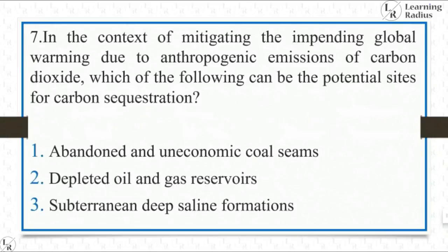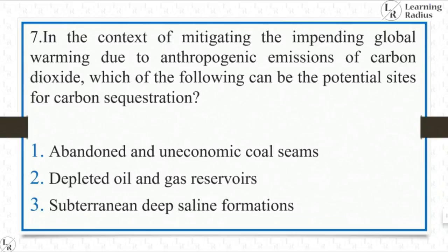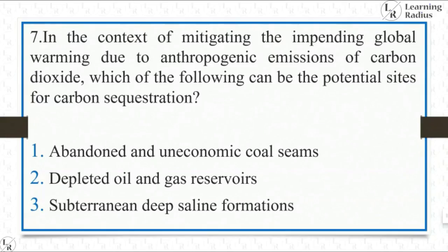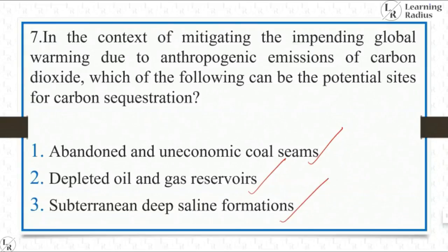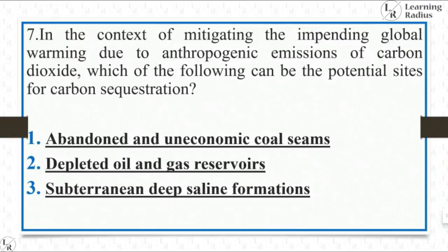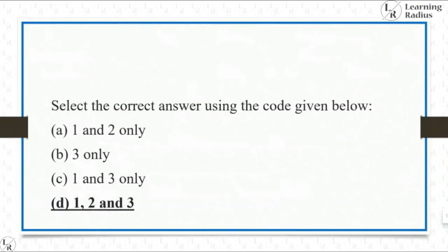In the context of mitigating the impending global warming due to anthropogenic emission of carbon dioxide, which of the following can be potential sites of carbon sequestration? Statement 1: Abandoned and uneconomic coal seams — right. Statement 2: Depleted oil and gas reservoirs — right. Statement 3: Subterranean deep saline formations — also right. All three statements are correct, so the answer is D, one, two and three.